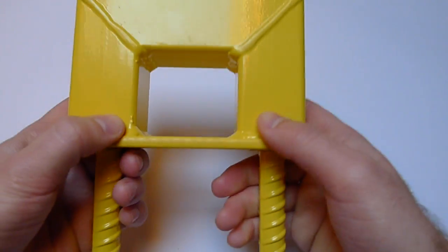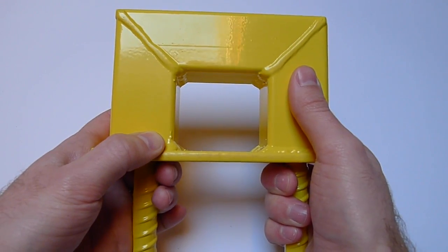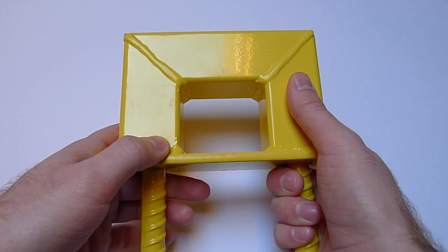The first thing you will notice is that it is quite heavy. This ground anchor weighs 2.1 kilogram.